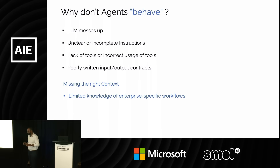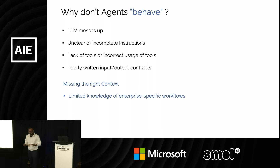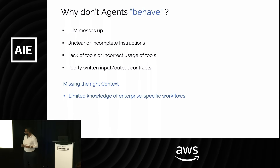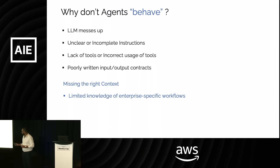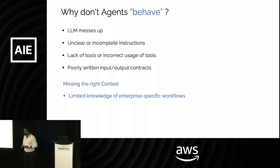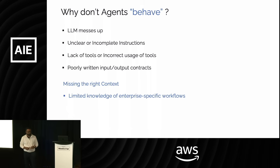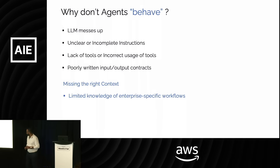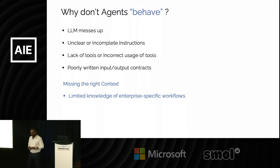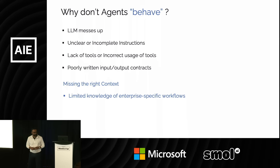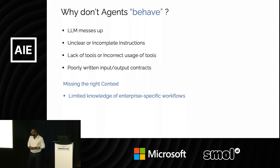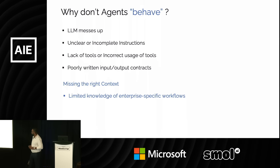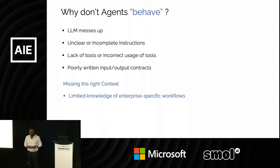There are many reasons why agents don't behave, but probably one reason that stands out is they miss the right context. And in the case of enterprises, that often means they do not have knowledge of enterprise-specific workflows.